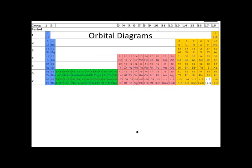Now if I ask you to do orbital diagrams, I won't be mean — I promise. I will not make you go all the way up to an 80-element. I'll usually ask you to do something no more than 20 or so. Let's do chromium. Chromium is element 24. Let's go a little bit past calcium here. Chromium's got 24 electrons, so I've got 24 electrons looking for locations.